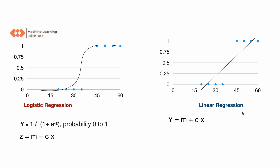For better understanding, let's compare logistic regression with linear regression. On the x-axis we can see a person's age, and on the y-axis whether or not the person has insurance — zero means no insurance, one means insured. Using linear regression, the line clearly doesn't cover all the points on the graph, whereas logistic regression covers almost all the points.